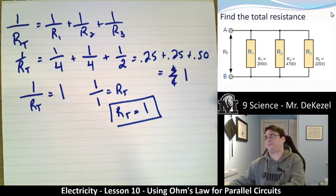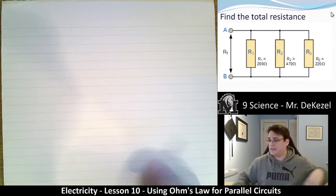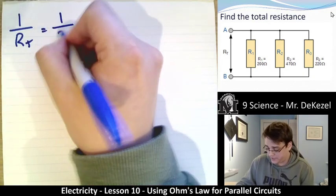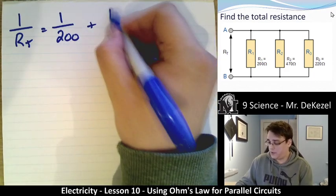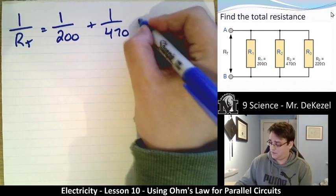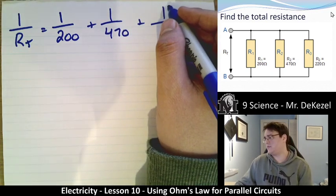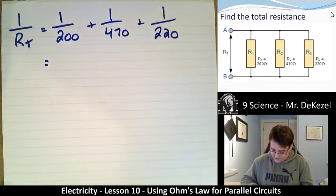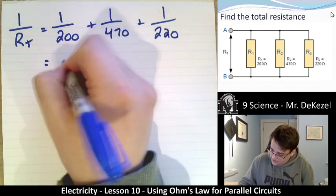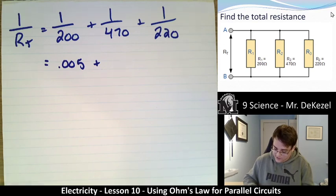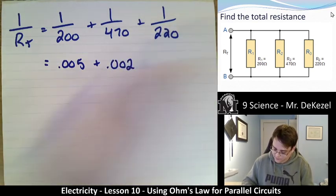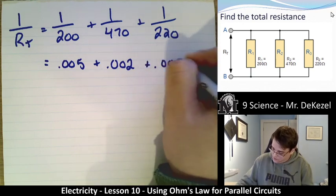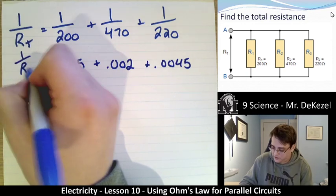Let's do another example — and I promise we're not going to get 1 this time. So 1 over the total resistance is equal to 1 over R1, which is 1 over 200, plus 1 over R2, which is 470, plus 1 over R3, which is 220. I'm going to plug these into my calculator. 1 divided by 200 equals 0.005. 1 divided by 470 equals 0.002. So 1 over the total resistance is equal to this sum.